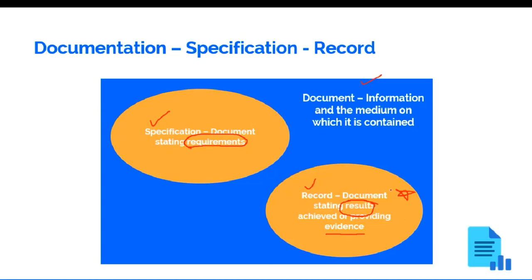So specification and records are types of documents, but a specification is a document stating requirements, and a record is a document stating results or evidence. The calendar on your desktop can be the record for meetings, or it can be evidence that meetings took place. That is the difference between a record and a specification.